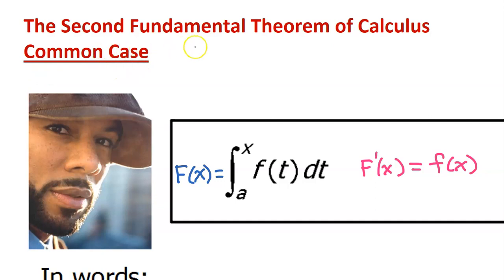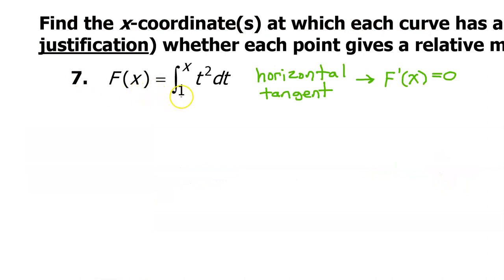The common case of the Second Fundamental Theorem of Calculus says that if you have an integral-defined function where the lower limit is a constant and the upper limit is x, the derivative will just be f of x. In other words, replace the placeholder variable with x and that's the derivative. This is the common case since we have a constant for the lower limit and x for the upper limit. Therefore, the derivative can be obtained by writing down the inner function but putting an x instead of a t.